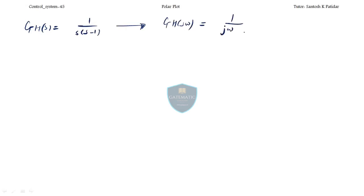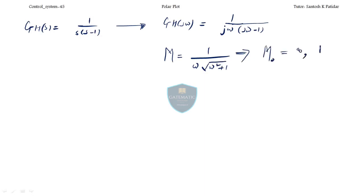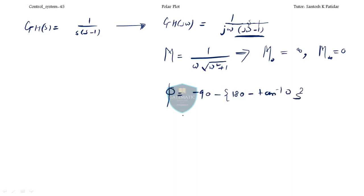Let us convert this into the frequency domain: it becomes 1 divided by j·omega times (j·omega minus 1). Find the magnitude: the magnitude is 1 divided by omega times square root of (omega squared plus 1). Find M(0) — it will be infinity — and M(infinity) will be 0. Now find phi: the phi of j·omega gives minus 90 degrees. Please do not make a mistake — check which quadrant j·omega minus 1 is in: the angle is 180 minus tan inverse of omega by 1.